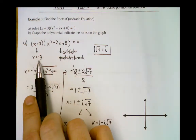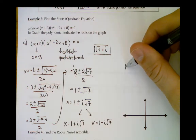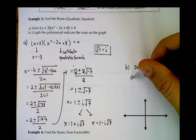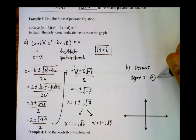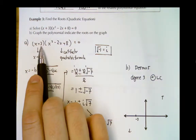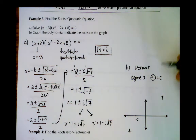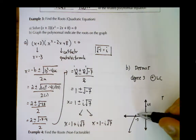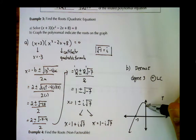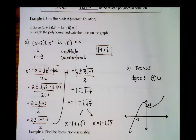So our two roots are 1 plus i root 7 and 1 minus i root 7. These don't give us x-intercepts, but they do tell us that we don't cross the x-axis anywhere other than the real root of negative 3. To graph this we would use Desmos. We're at degree 3 with a positive leading coefficient, so we start low and end high. The x-intercept is negative 3 and the y-intercept is 3 times 8 equals 24.